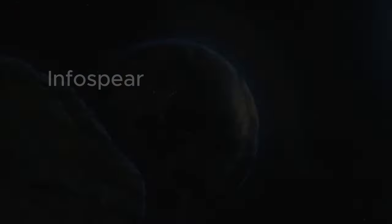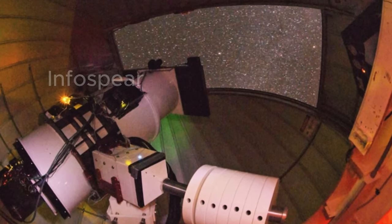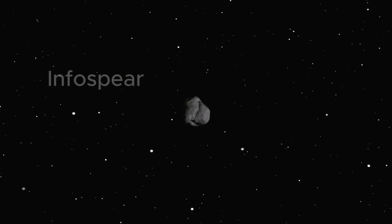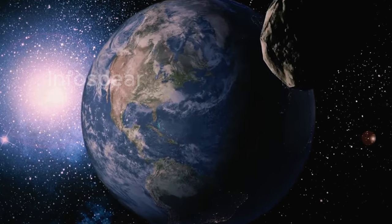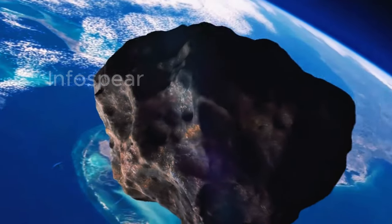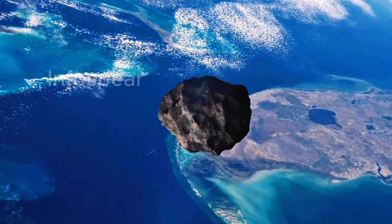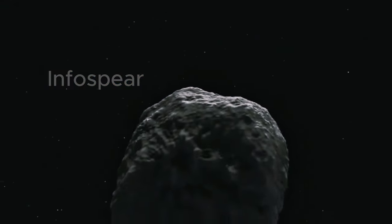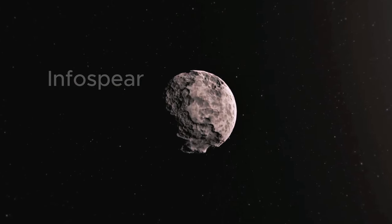Asteroid 2024 PT5 was spotted by none other than the Atlas Telescope, a high-tech system built to track down asteroids that could potentially threaten Earth. But here's the cool part. Even though PT5 is way too small to see with the naked eye, its significance is absolutely massive. Unlike our regular dependable moon, this mini moon is on a short, unpredictable ride with a stretched-out orbit that keeps scientists on their toes. It's a rare and wild space phenomenon that's shaking up how we look at these tiny celestial travelers.